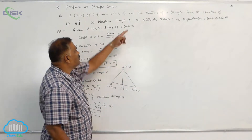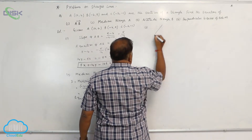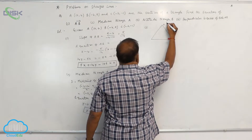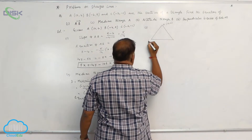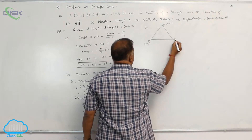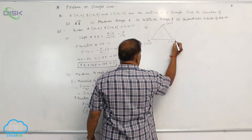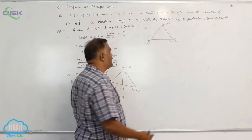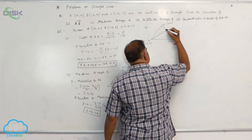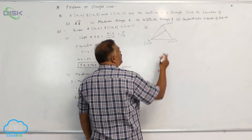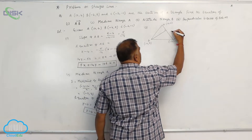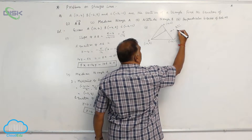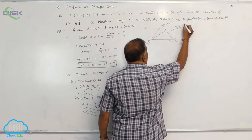Now the third part: we need the altitude through B. Draw the triangle again with A(10, 4), B(-4, 9), C(-2, -1). The altitude through B is perpendicular to AC. The slope of AC is (4 - (-1))/(10 - (-2)) = 5/12. So the perpendicular slope is -12/5.